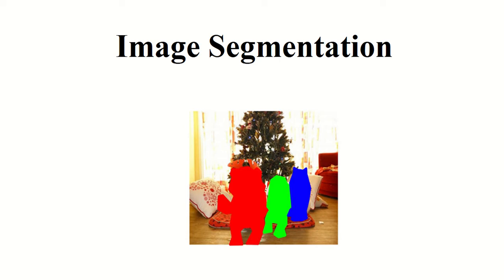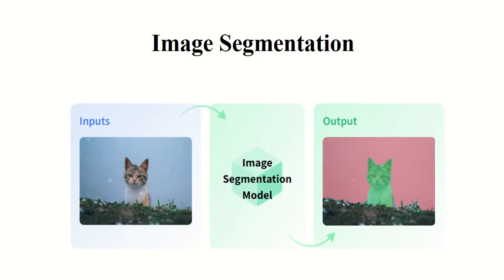Now what will be the input and what is the output of image segmentation? The input will be the image. When you give an image to any image segmentation model, your output will be a segmented image — the mask. So if I give an image, it will tell me which is the background and which is the foreground, or if I give an image with multiple objects it will identify the multiple objects and give a mask to identify them.